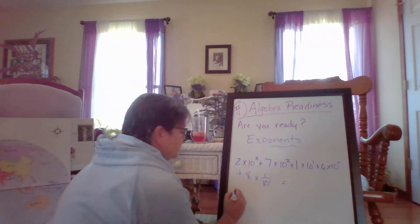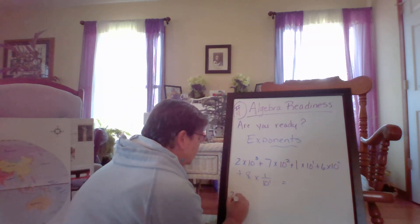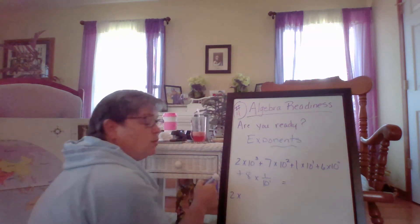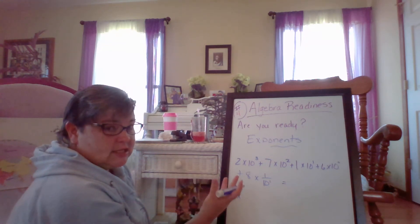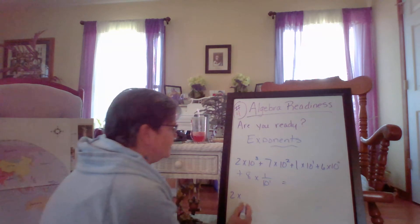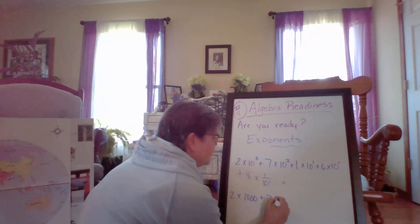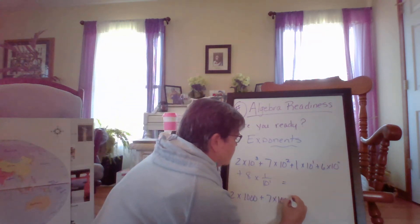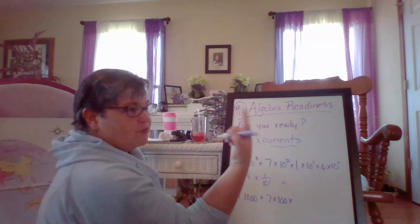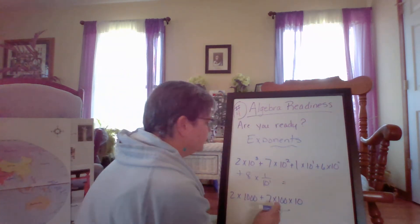So the first thing we're going to do is we're going to change all of our exponents into numbers. So two times ten to the third power, so ten times ten times ten, right? That's three zeros, that's a thousand. Plus seven times ten times ten, ten times ten, two zeros, that's a hundred. Plus ten to the first, that's just ten.